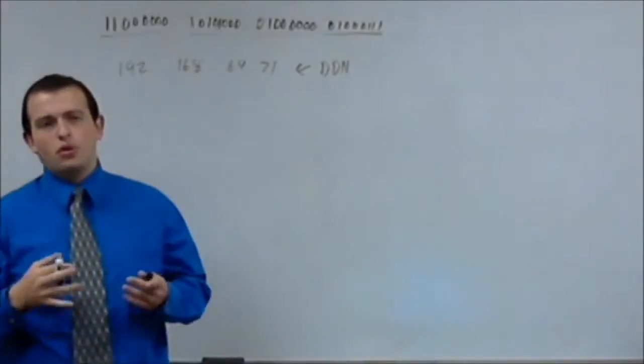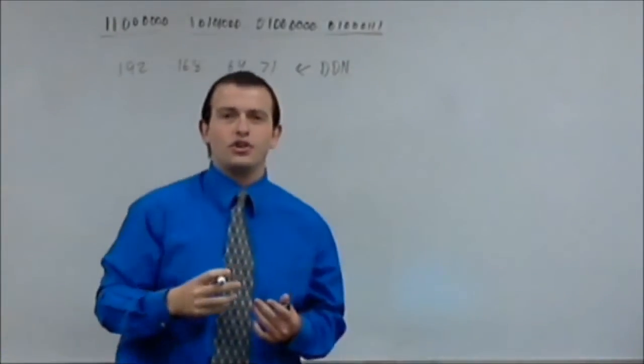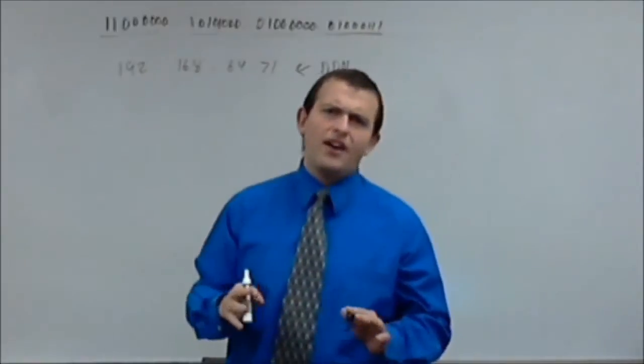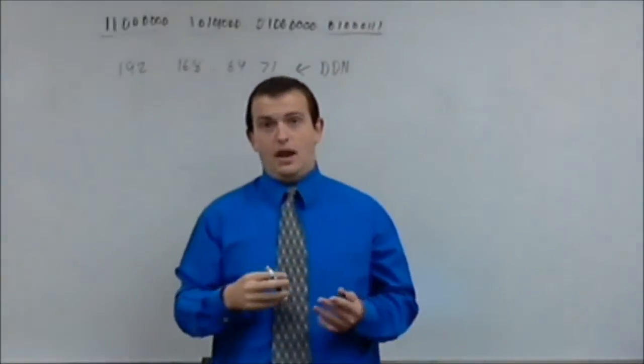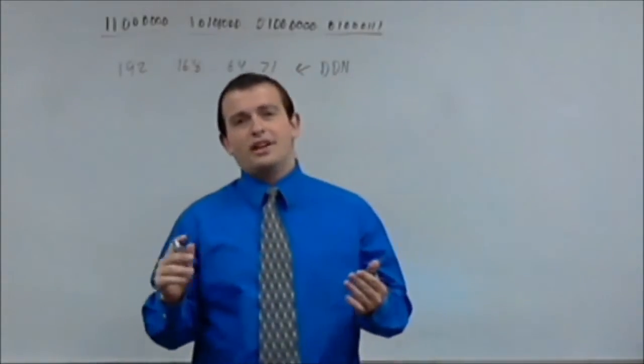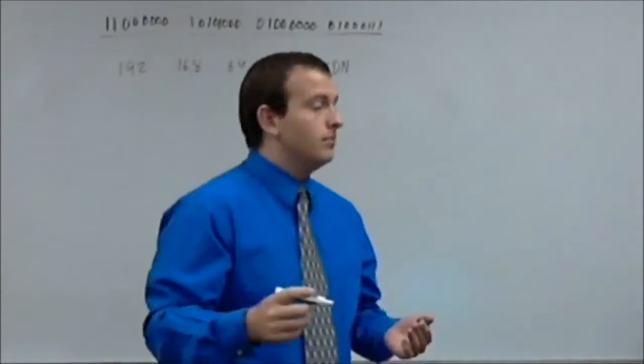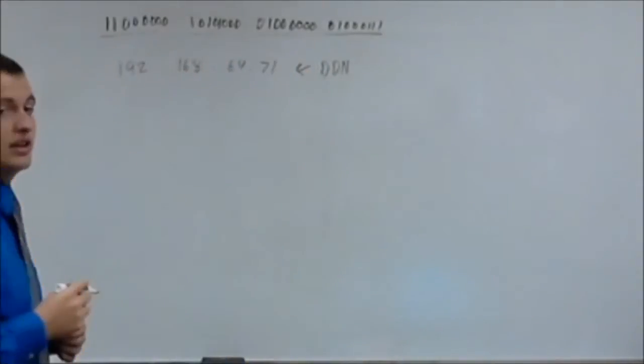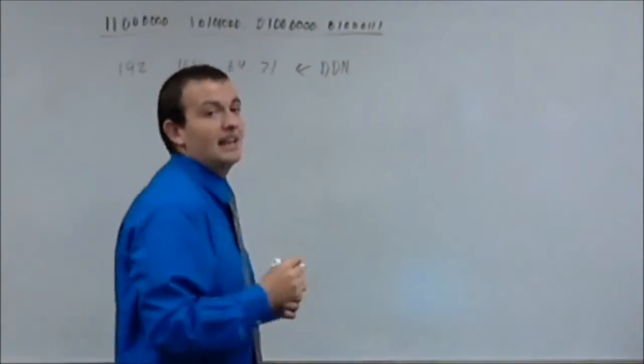This is what you normally are going to see IP addresses referred to. Now, there's another very important part of a network address. Whenever you've got a network address, you've got your dotted decimal notation address part, and then you're going to have your subnet mask.